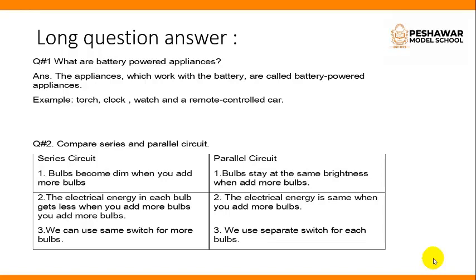Question number 2: Compare series and parallel circuit. Series circuit: In series circuit, bulbs become dim when you add more bulbs. The electrical energy in each bulb gets less when you add more bulbs. We can use the same switch for more bulbs.